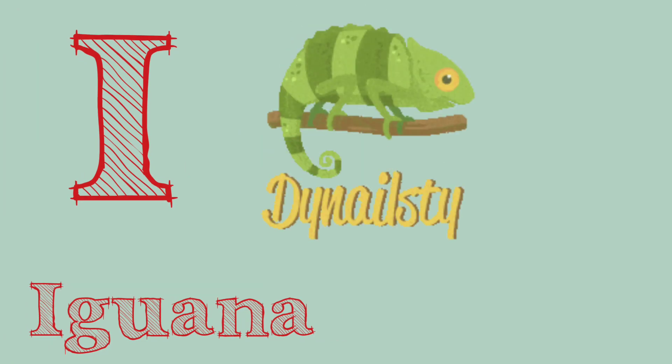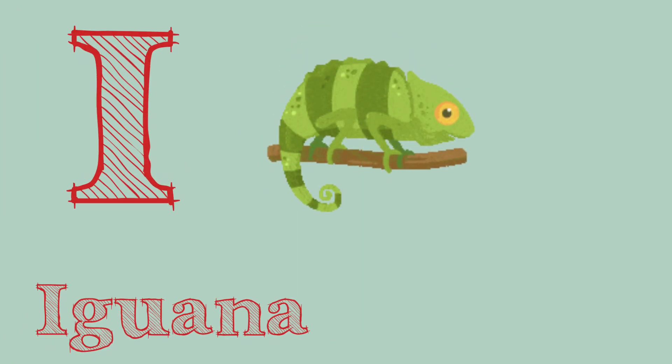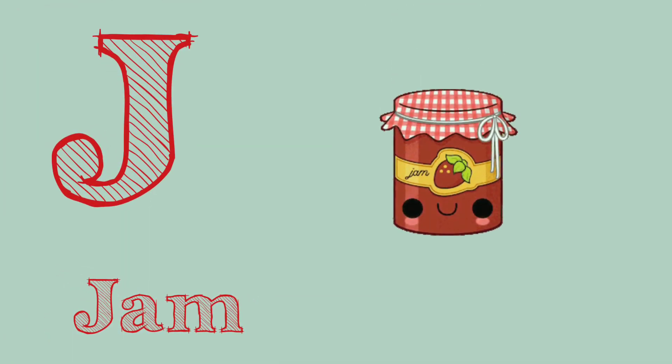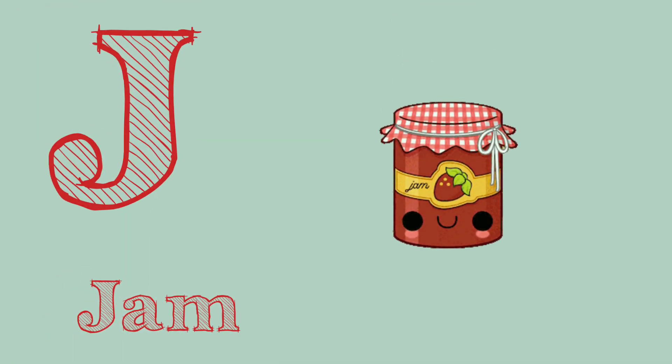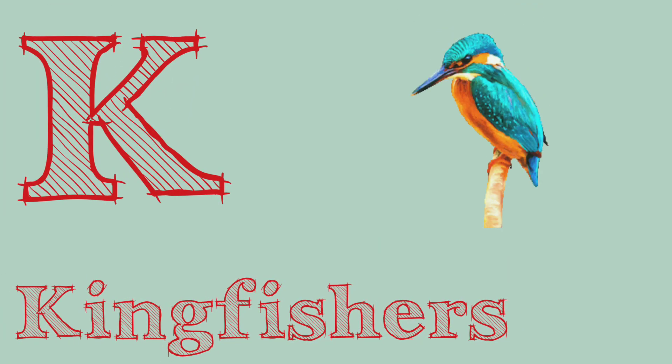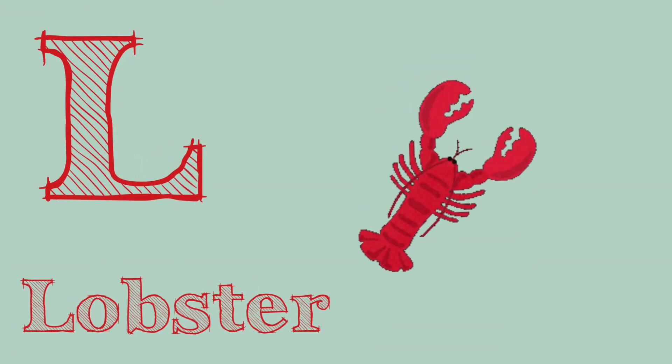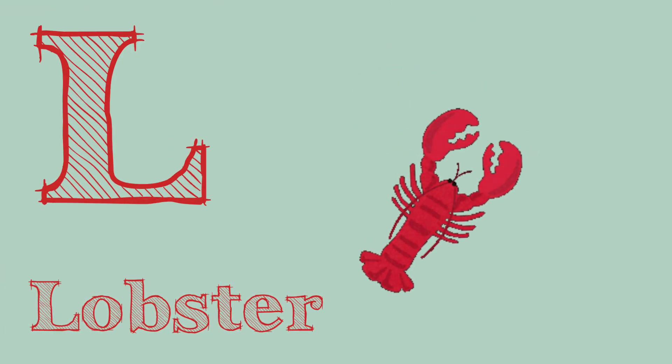I. I is for iguana. J. J is for jam. K. K is for kingfisher. L. L is for lobster.